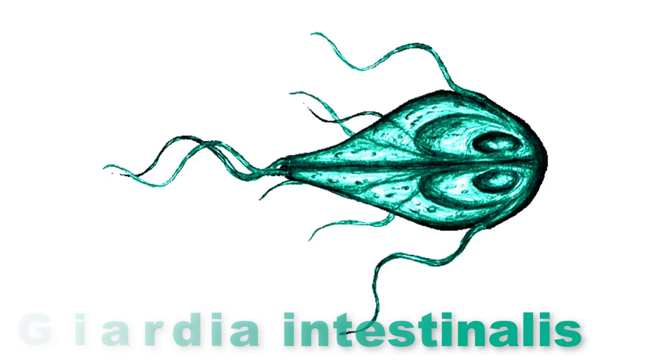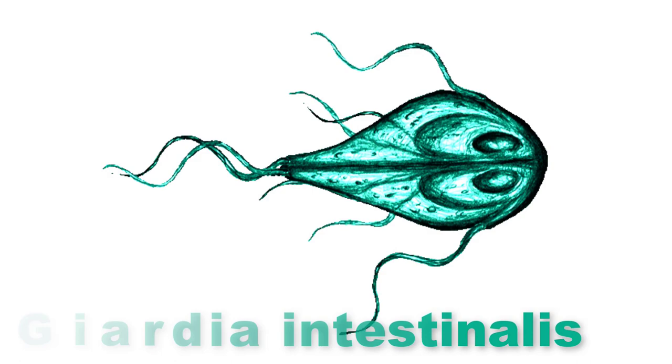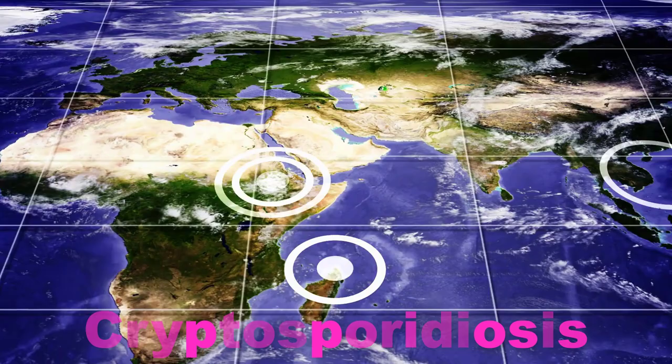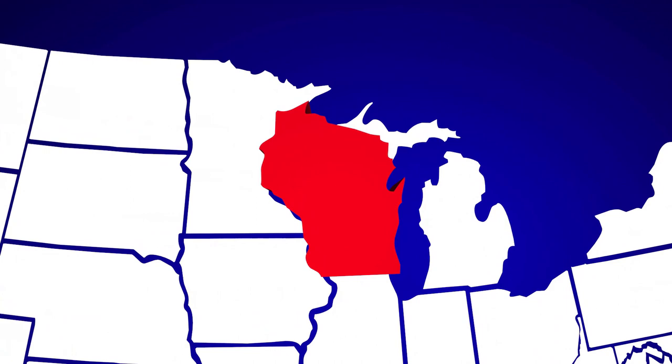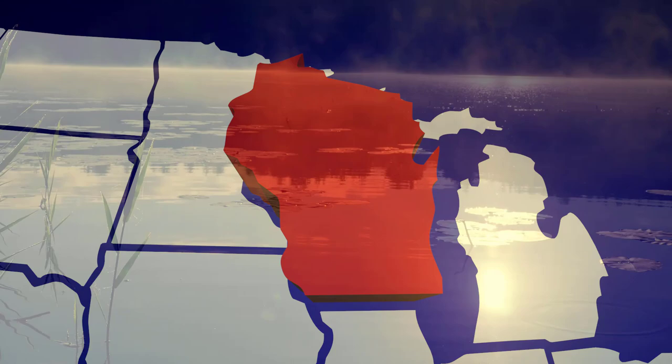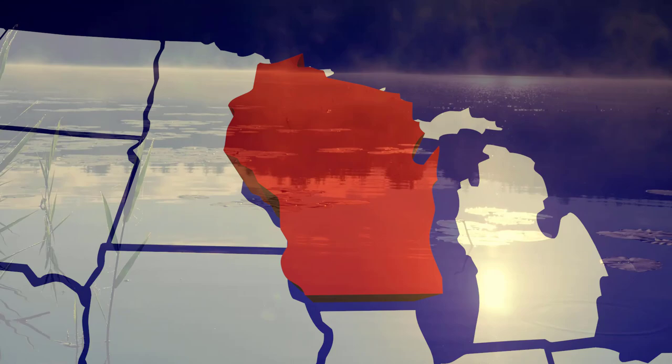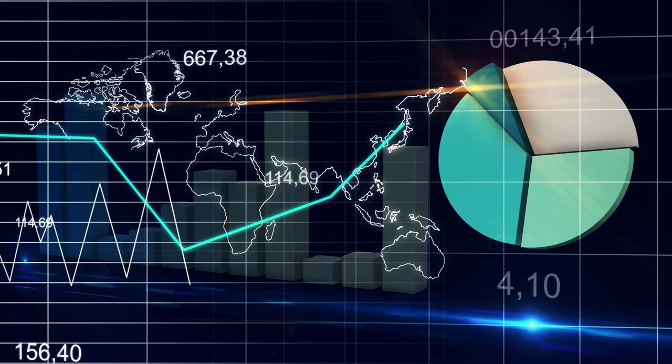Since 1976, outbreaks of cryptosporidiosis have been reported in several countries. The most remarkable outbreak occurred in 1993 in Milwaukee, Wisconsin, where more than 400,000 people were affected and 54 died, making it the largest waterborne infection ever recorded in the United States. In 2007, there were 11,170 reported cases, with the highest number of reported cases in children between 1 and 9 years of age. Cryptosporidiosis is caused by the apicomplexans Cryptosporidium parvum and C. hominis.